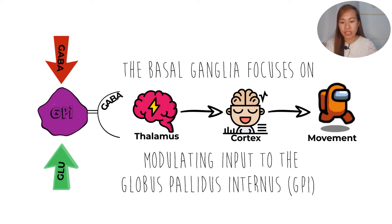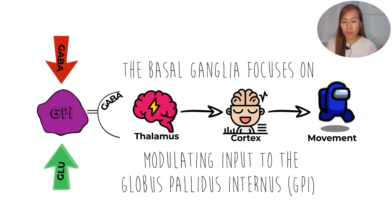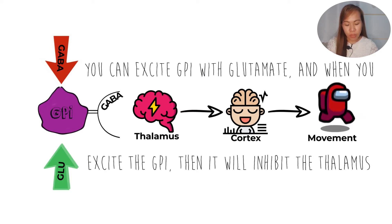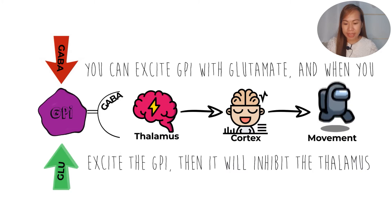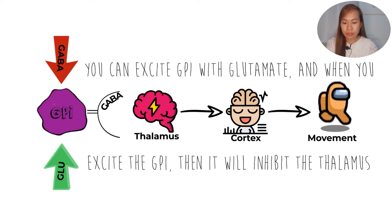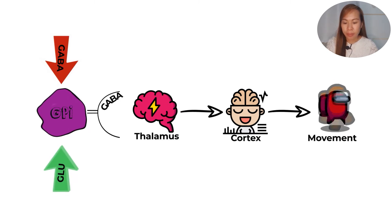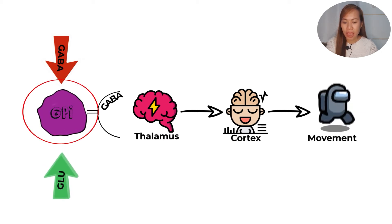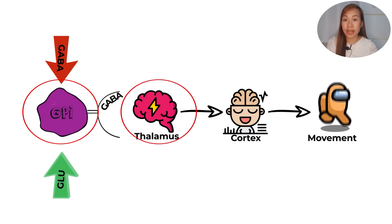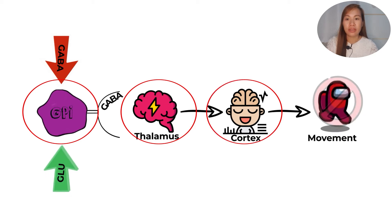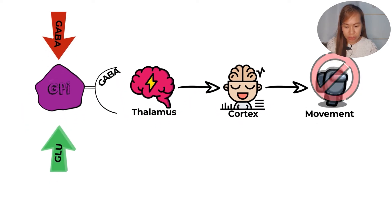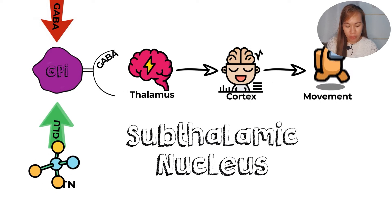If we want to move, GPI has to be inhibited. If we want no motion, GPI has to be activated. We can excite the globus pallidus internus with glutamate. If glutamate is present, it will excite GPI. If GPI is excited, it can produce GABA. If GABA is produced, it will inhibit the thalamus, and therefore there will be no movement. What produces the glutamate neurotransmitter is the subthalamic nucleus — I want you to remember that.